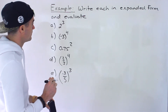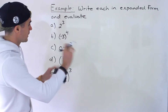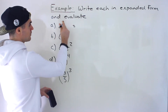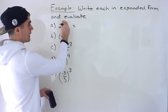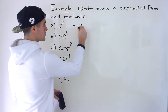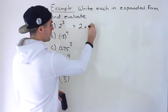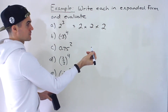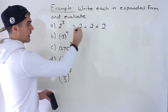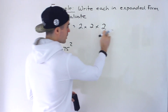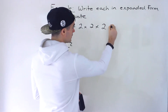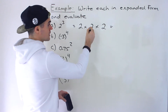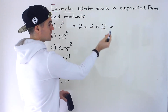We have 2 to the power of 3. If we write that in expanded form, what we're doing is taking that base and multiplying it by itself this many times. So we're taking 2, multiplying it by itself 3 times. You could do this all in one shot in your calculator.